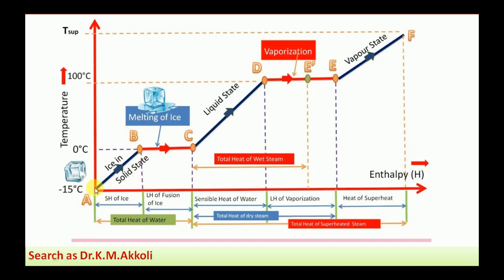From minus 15 degree Celsius the substance is in the form of ice. If you start heating at minus 15 degree Celsius, the temperature of the ice will keep increasing while it is still in the solid state. The heat added during this phase is the specific heat of ice.